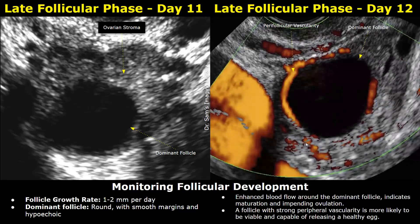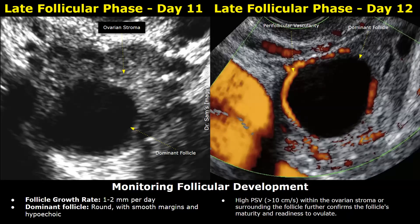On power or color Doppler, enhanced vascularity seen around the dominant follicle is a good sign indicating maturation and impending ovulation. A follicle with strong peripheral vascularity is more likely to be capable of releasing a healthy egg. If perifollicular vascularity is absent, it may indicate a failure of ovulation. A peak systolic velocity of 10 centimeters per second or greater within the ovarian stroma or surrounding the follicle further confirms a successful impending ovulation.